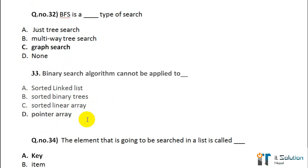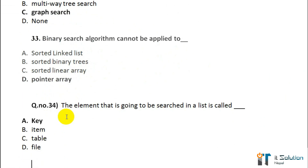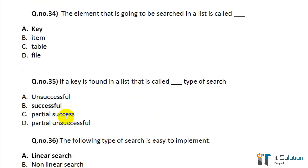Question number 33: Binary search algorithm cannot be applied to — pointer array, option D — pointer array. Question number 34: The element that is going to be searched in a list is called option A — key. Question number 35: If a key is found in a list, that is called what type of search? Option B — successful.